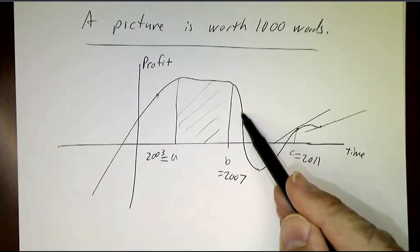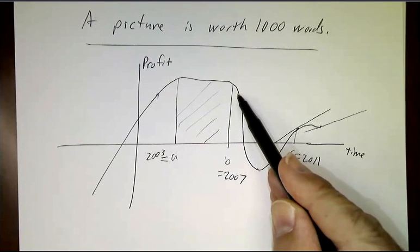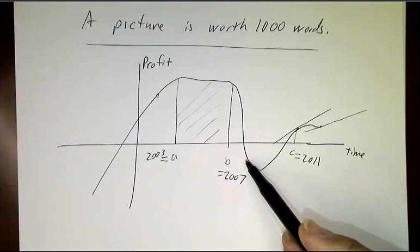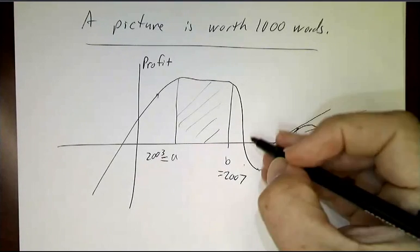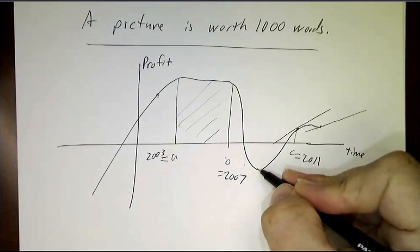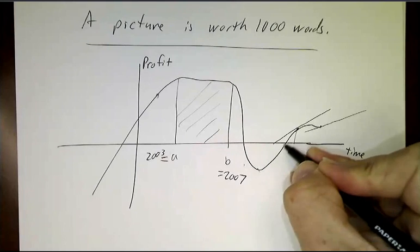What about down here? Well, it was pretty steep in the downhill direction. That was the Great Recession. It started in 2008, and things bottomed out in 2009 and came back up.